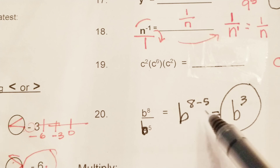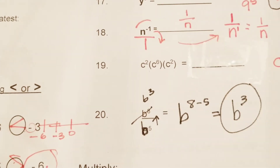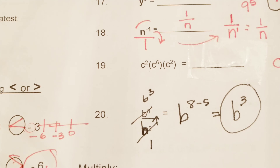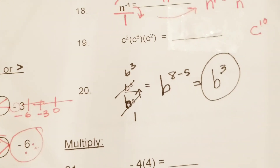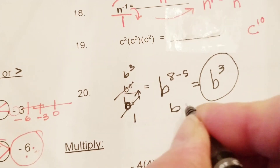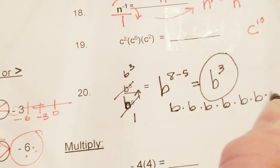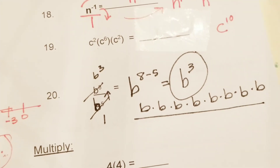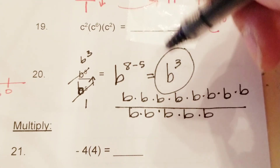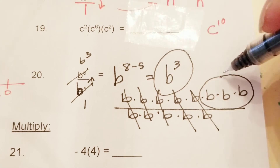You can also look at it as just 8 minus 5 equals 3. It's like saying b to the fifth goes into b to the eighth, b to the third times, and b to the fifth turns into one. Another great way when starting out: write b to the eighth as repeated multiplication eight times, divided by b to the fifth written five times, then start canceling them out — cancel, cancel, cancel, cancel, cancel — and you're left with b to the third power on top.